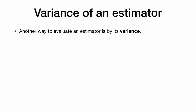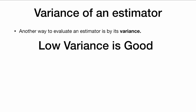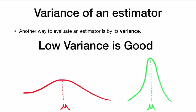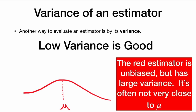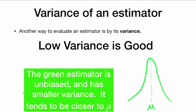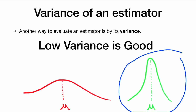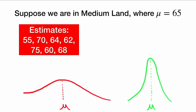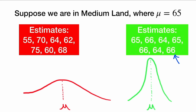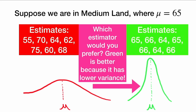Another thing we want to consider is the variance of an estimator — a low variance is good. Here we have two distributions. One estimator is unbiased but has a large variance, meaning sometimes we get values of x-bar that are not very close to the true value mu. The green estimator is also unbiased but has a smaller variance, and its values tend to be very close to the true value of mu. So the estimator with lower variance is better. In medium land where mu is 65, both are unbiased and give estimates around 65, but the green one's estimates are much closer to 65. The green one is better because it has lower variance.